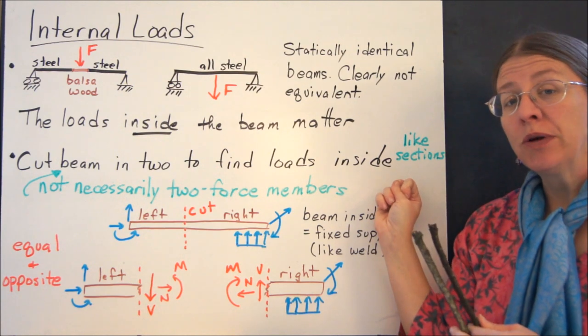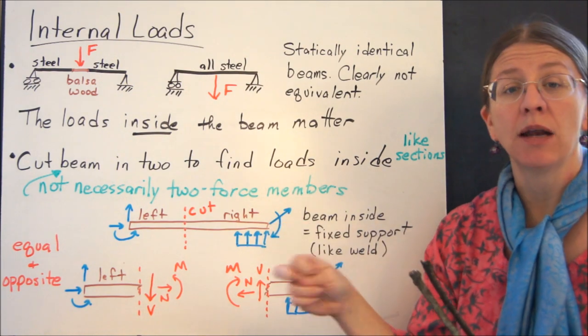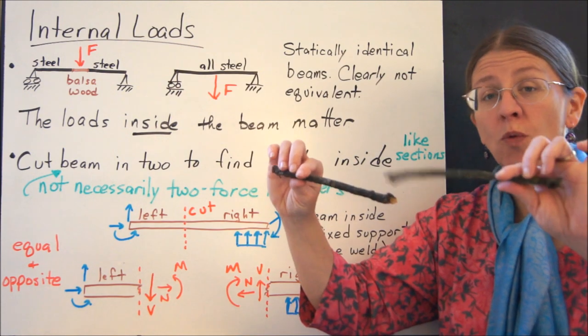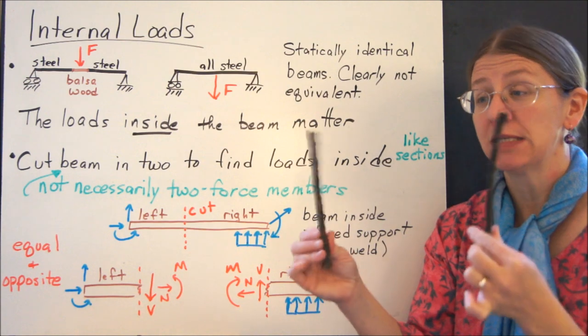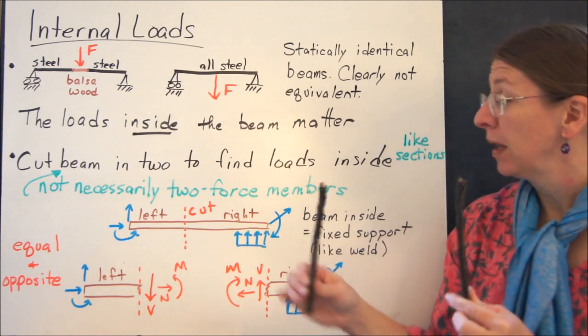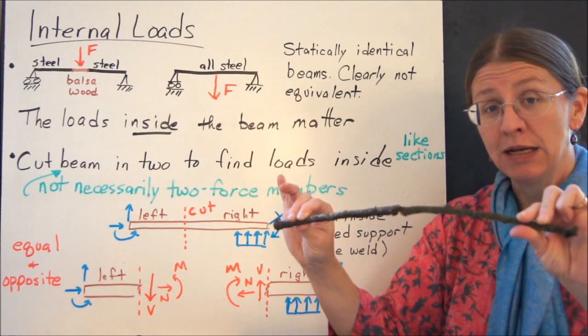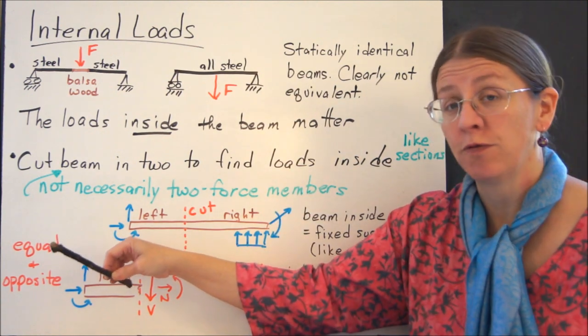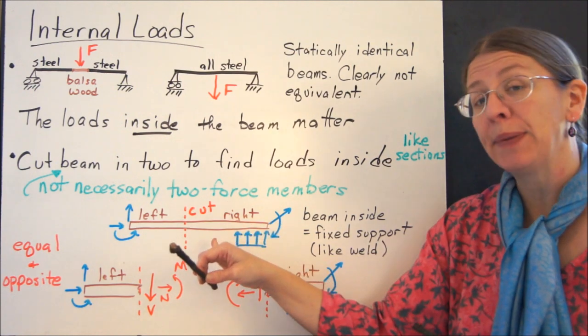What I want to do right now is cut it apart so I can look at both sides and what was going on at that break when the stick breaks. It's kind of like what we were doing when we were looking at trusses by the method of sections, except I'm not necessarily cutting just two-force members. In fact, when I'm trying to bend this like that, I'm applying a bending moment, which means my stick was not a two-force member.